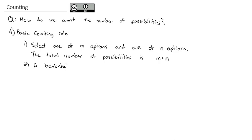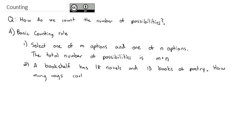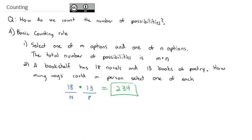So for example, if a bookshelf has 18 novels and 13 books of poetry, the question is how many ways could a person select one of each? The way we can answer this is we'll set up a story — we'll set up space for every decision and put the number of options for those decisions in the space. We need to choose a novel and a poetry book. There are 18 novels and 13 poetry books, so we just multiply those together to get 234 different ways.